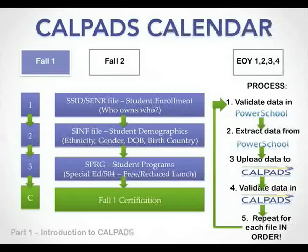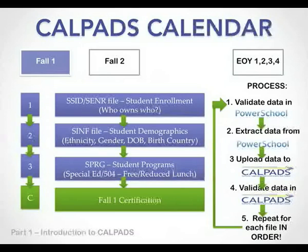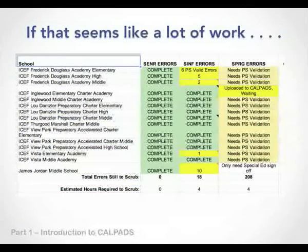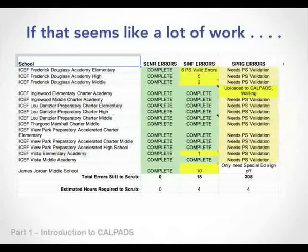You first have to validate your data in PowerSchool or your other SIS system, extract it from that system, upload it to CALPADS, validate it in CALPADS, and repeat that process for each file — the SSID files, SINF files, and SPRG files — until your data is matching between your student information system and CALPADS. It's laborious, but it gets results. I used to track enrollment errors for the schools I supported, and you have to keep working on them until you scrub all of them clean and reach a complete state for the validations.